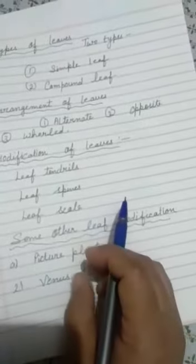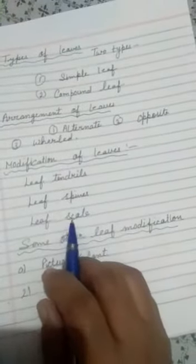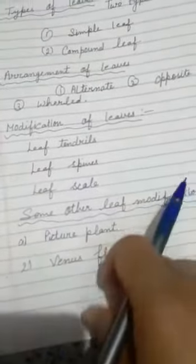Now, some other leaf modifications. Number one is pitcher plant and the second is venus flytrap. Besides some leaves modified that you have studied so far, there are other modifications of leaves that help the plant capture food. Let us know more about the pitcher plant and the venus flytrap. We already discussed about the pitcher plant and the venus flytrap in the fifth standard.